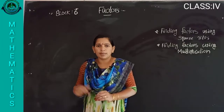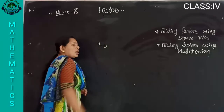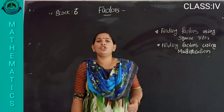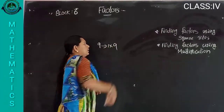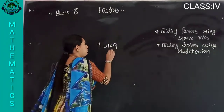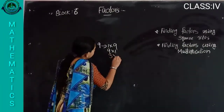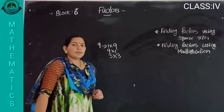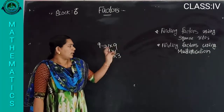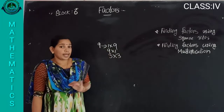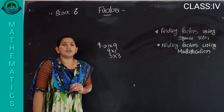Let me do some problems. Take the number nine. We want to write nine as the product of any two numbers. One into nine is nine, nine into one is nine, and three into three is nine. No other cases are possible. So only these three cases.